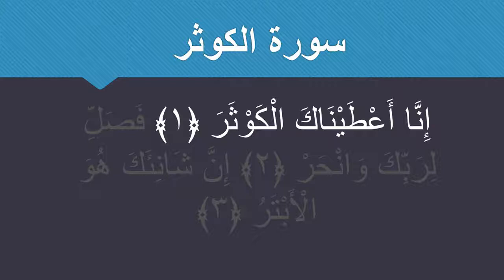A'udhu billahi minash-shaytanir-rajim. Bismillahir-rahmanir-rahim. إِنَّا أَعْطَيْنَاكَ الْكَوْثَرَ. Breaking it down: hamza kasra, nun shadda — 'inna.' Then alif sukun — 'na.' So 'inna' means 'verily we.' Next: hamza fatha, 'ain sukun — 'a',' then ta fatha ya sukun — 'a'tay.' Then nun fatha, alif sukun — 'na.' So 'a'tayna.' Then kaf fatha — 'ka.' So 'a'taynaaka.' Then kaf fatha, lam sukun — 'kal.' Then kaf fatha, waw sukun — 'kaw.' Giving us 'a'taynakal kawthar.' That's the first verse.